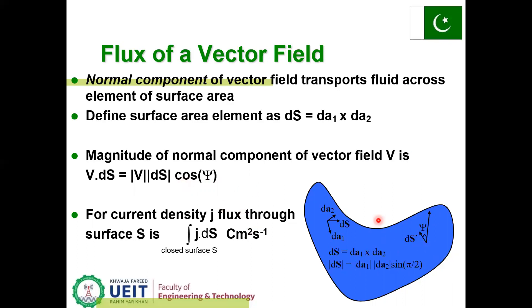For current density j, the flux through surface S equals the integral of j dot dS in centimeters squared per second. This is the integral over closed surface S.